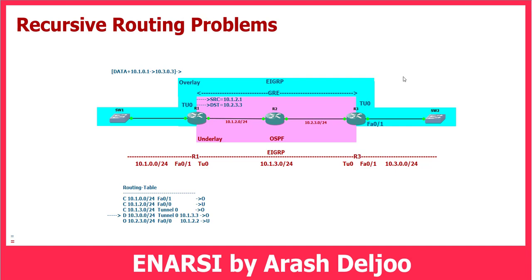About EIGRP, we are configuring two EIGRP instances. What happens when we configure the overlay routing protocol on one of the underlay interfaces? This is very common. We had previously learned 10.2.3.0/24 from OSPF. Now, if EIGRP is also enabled on Router3's FastEthernet0 interface, then in Router1 we will receive 10.2.3.0/24 from EIGRP as well. Now in Router1, we have two entries for 10.2.3.0/24.